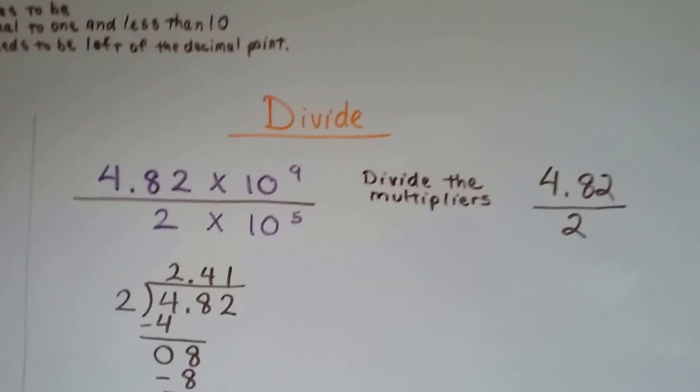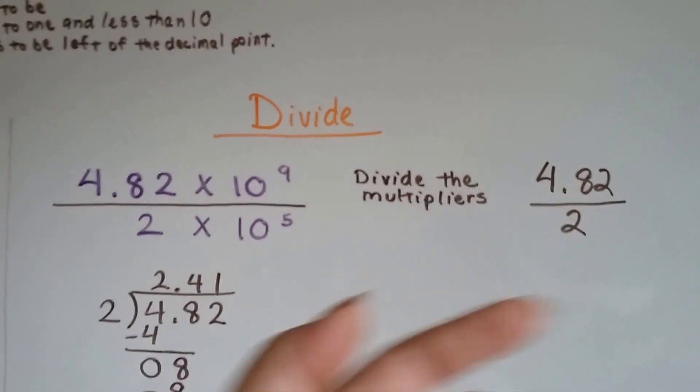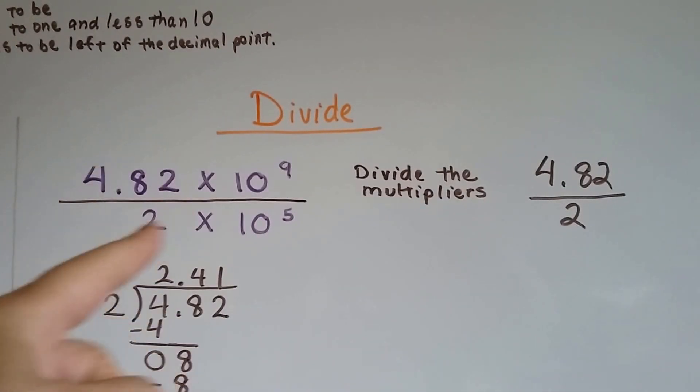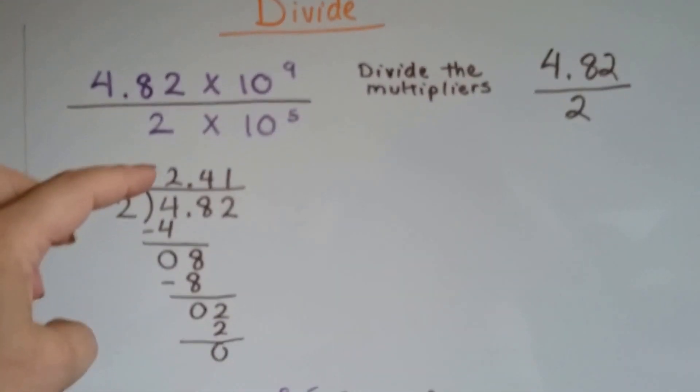Now, when we're dividing, we remember that all fractions are just little division problems. So, we're going to divide the multipliers, this part right here. And, 4.82 divided by 2 comes out to 2.41.